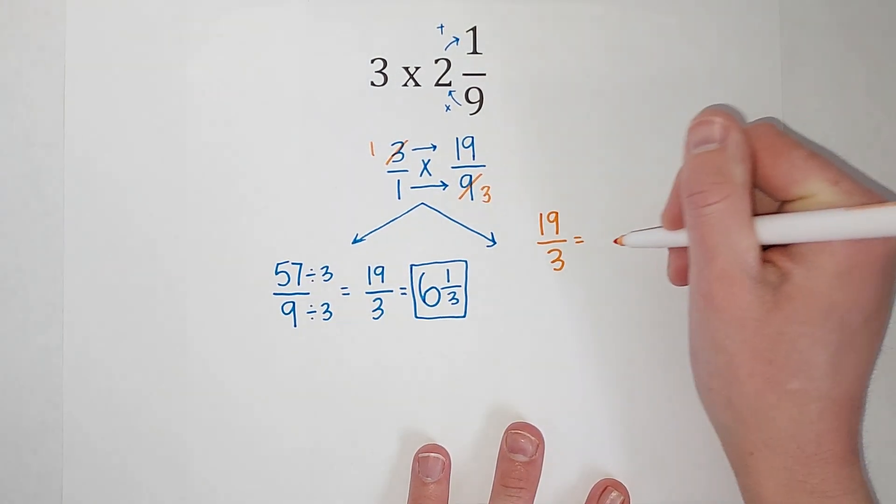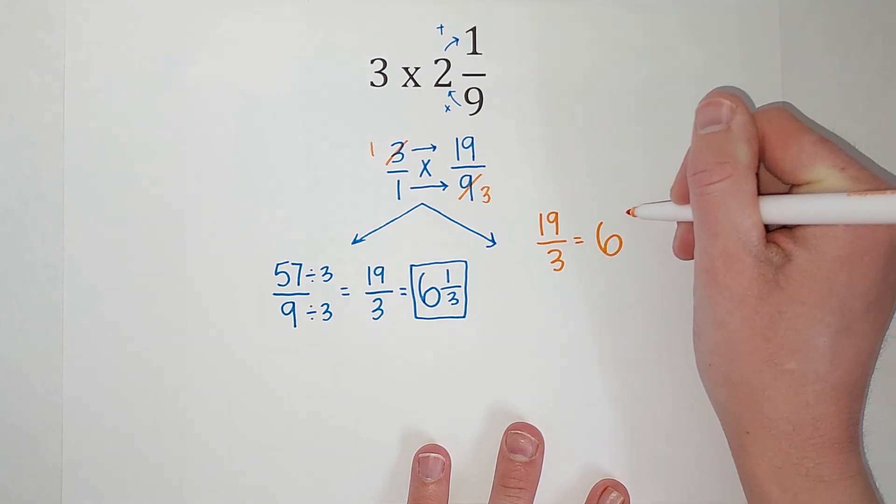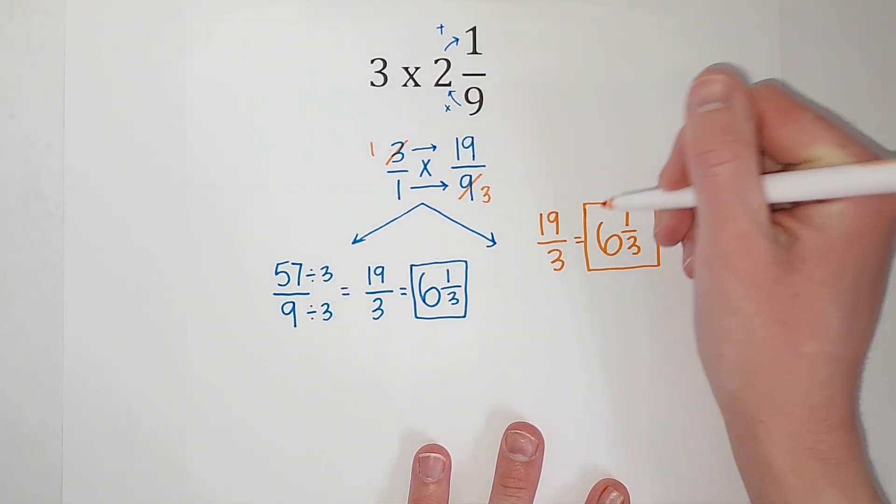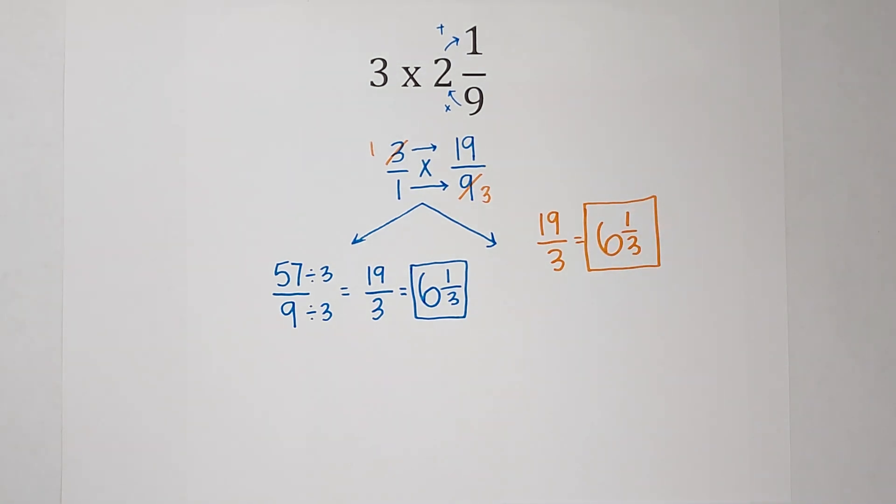And then it simplifies or converts, I should say, to the same mixed number. Hopefully that made sense. 3 times 2 and 1/9 gives me 6 and 1/3. I will link some other fraction videos if you need them. Bye!